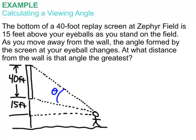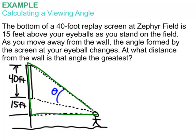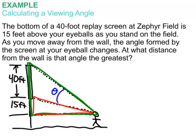Now, since we're concerned with angle theta, we're immediately presented with a problem: the triangle that theta is embedded in is not a right triangle, and at this point in trigonometry we only know how to deal with right triangles. Here's how we get around that — we recognize that we do have some right triangles on the screen. There is a smaller right triangle and a larger right triangle that we can use.